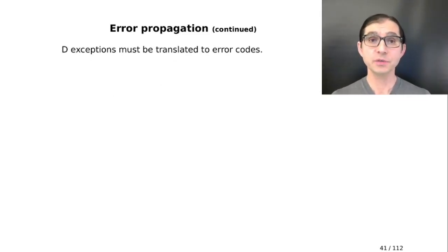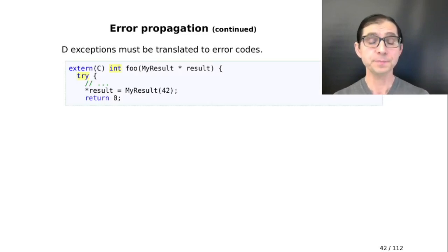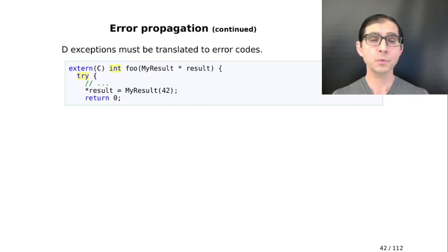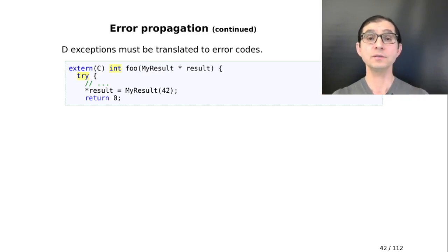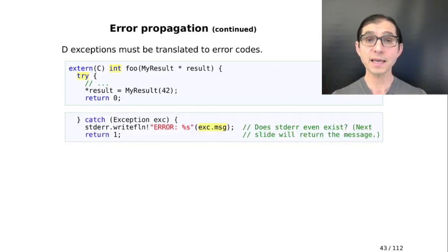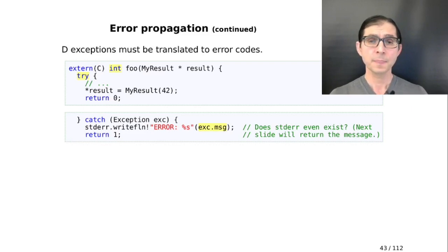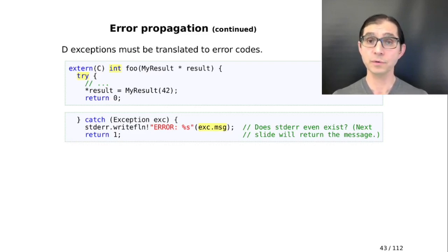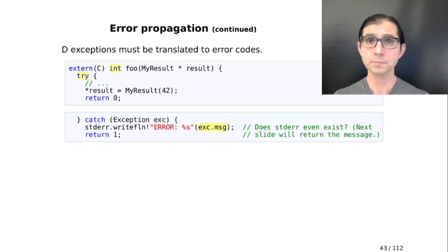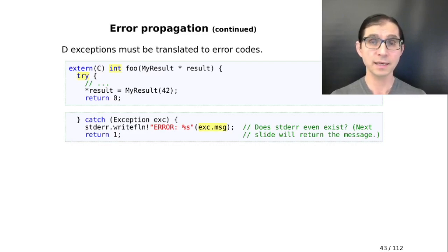We have to translate exceptions to error codes. One way is to wrap everything in try-catch blocks on our extern C library functions. We can return a status object encapsulating an error code and optionally an error message. I will improve on this code later because stderr may not even exist in the environment we're executing, and because we are dealing with library code, we may not know anything about the application calling us.